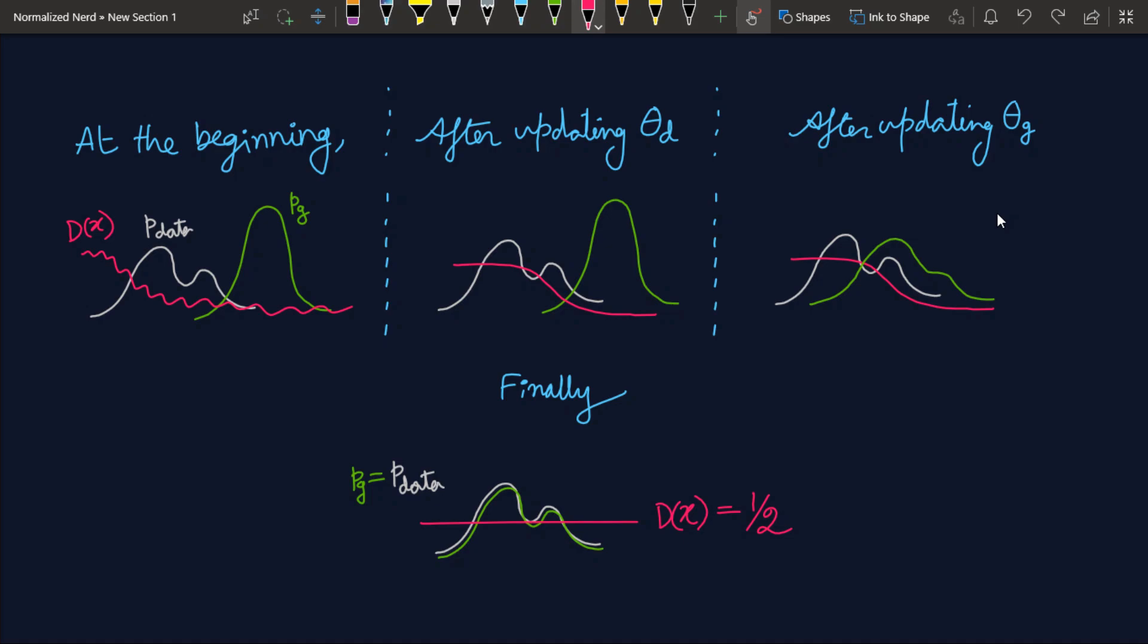Now after the generator has learned something, look at that the distribution Pg is now closer to the Pdata. And the discriminator is trying to predict the true label of the data points, but it is not performing as well. Now at the end, when the generator has attained the minimum of the value function, then it has successfully replicated the distribution function of the data point. So now Pg is indistinguishable from Pdata. So now it is impossible for the discriminator to tell which data point is an original one and which data point is a generated one. So the discriminator will output 0.5 for every input. And that is what we want to achieve.